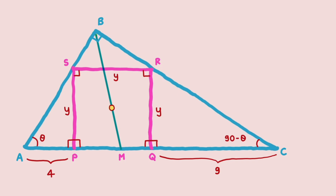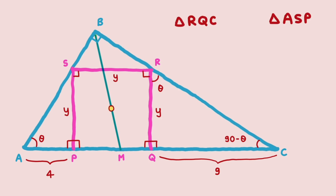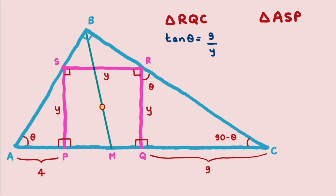Looking at triangle RQC and applying the angle sum property, we get angle R = theta. Since triangles RQC and ASP are both right angle triangles, we can apply trigonometric ratios. In triangle RQC, tan theta = 9/Y, and in triangle ASP, tan theta = Y/4. Comparing these two equations gives Y = 6, so the side length of the square is 6 cm.